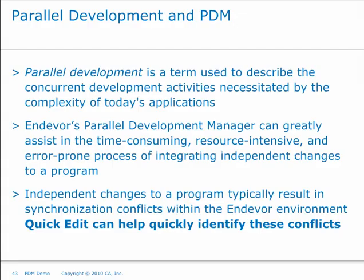Parallel development is basically a term to describe more than one person working on a program. Nowadays it's very hard to avoid that — there could be five, ten, or just two people working on the same program. No matter how many you have, you still need a way to track, control, and make sure you're not stepping on each other's toes. You don't want to regress code or wait until the last minute to find out somebody else has been working on it. Our philosophy is: the sooner you know about it the better, so you can take care of it proactively rather than reacting when something's going to production.